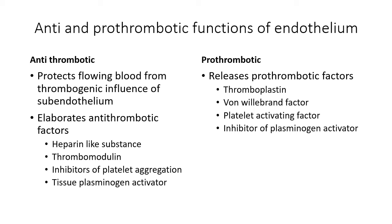The endothelium also elaborates anti-thrombotic factors such as heparin-like substances (which accelerate antithrombin 3 and inactivate clotting factors), thrombomodulin (which converts thrombin into an activator of protein C, a potent anticoagulant), inhibitors of platelet aggregation like ADPase and PGI2, and tissue plasminogen activator which accelerates fibrinolytic activity. Its pro-thrombotic functions include releasing factors like thromboplastin, von Willebrand factor, platelet activating factor, and inhibitor of plasminogen activator.